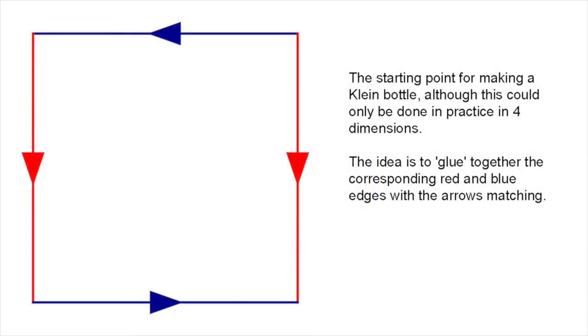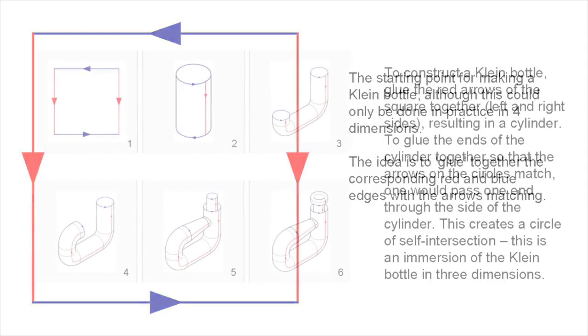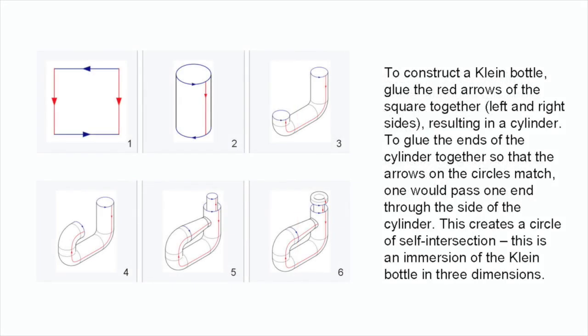Take a rectangle and join one pair of opposite sides to make a cylinder. Now join the other pair with a half twist. The result is a Klein bottle. Sound easy?